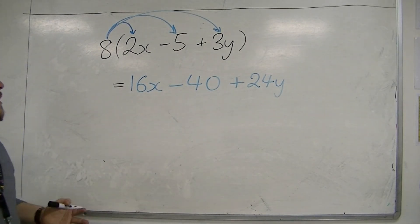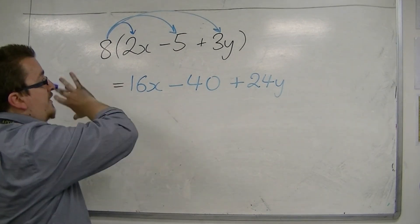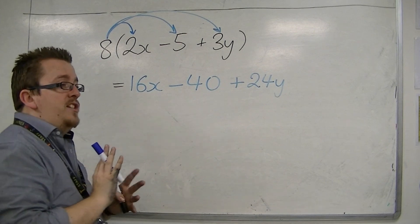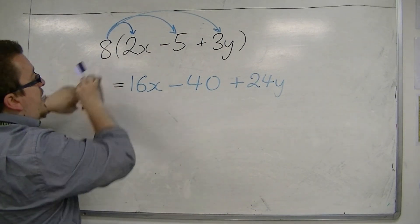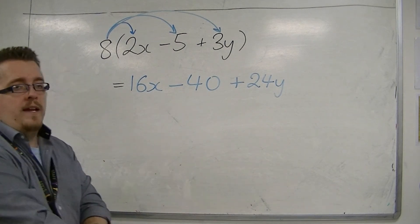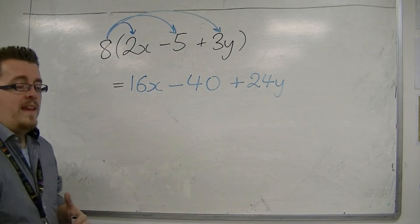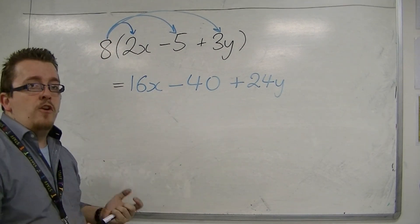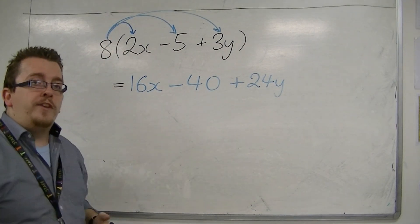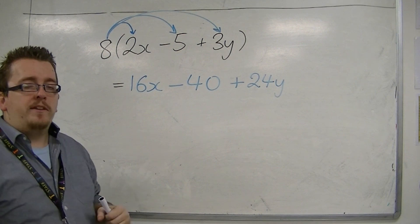And that's how I can write, I can expand a bracket. It doesn't matter how many terms I've got in the bracket, but I'm multiplying each of them by the number that is outside. Okay? And that's how we expand brackets. And using these arrows can really help you make sure you've got all the terms correct and all the signs correct as well.